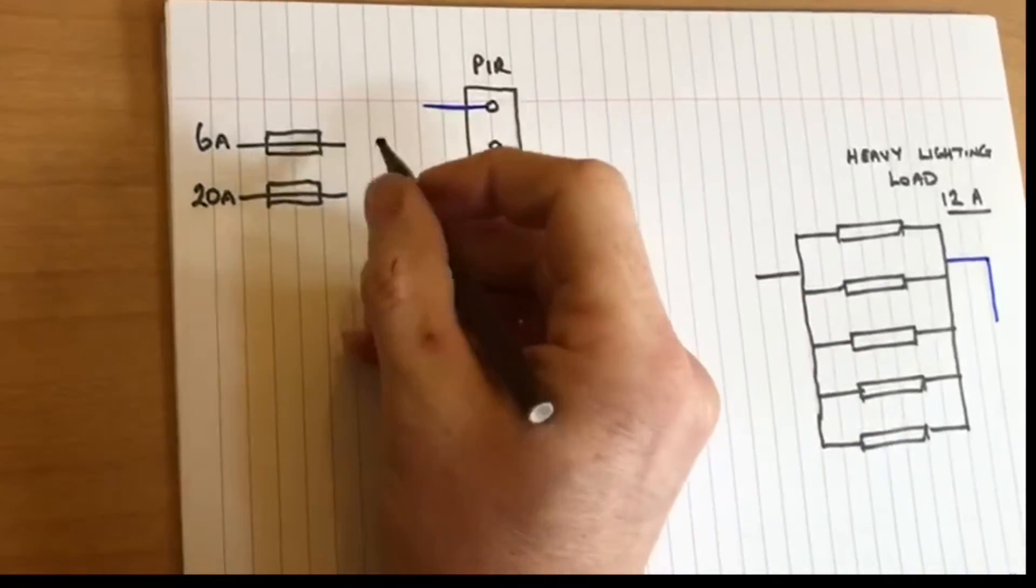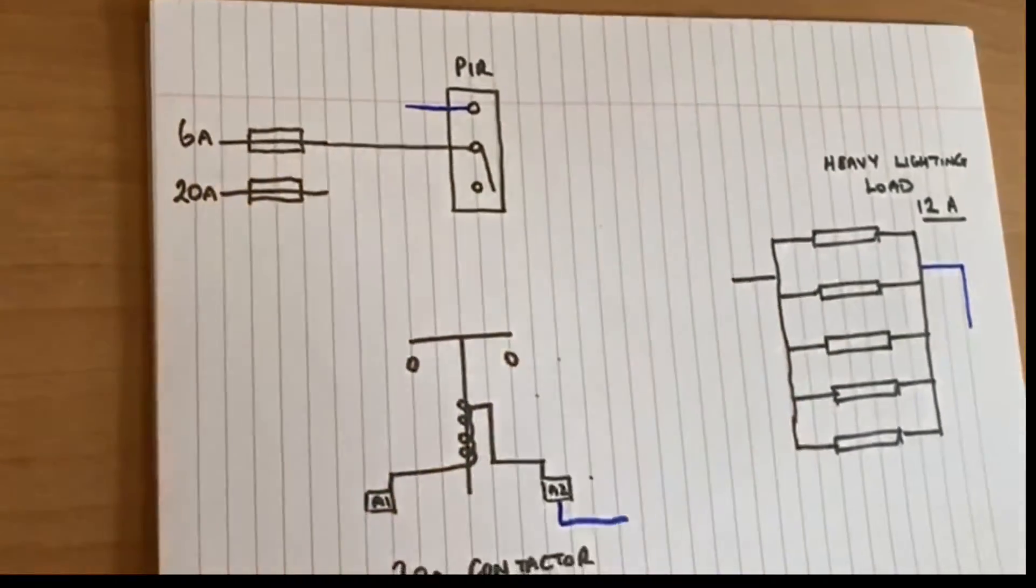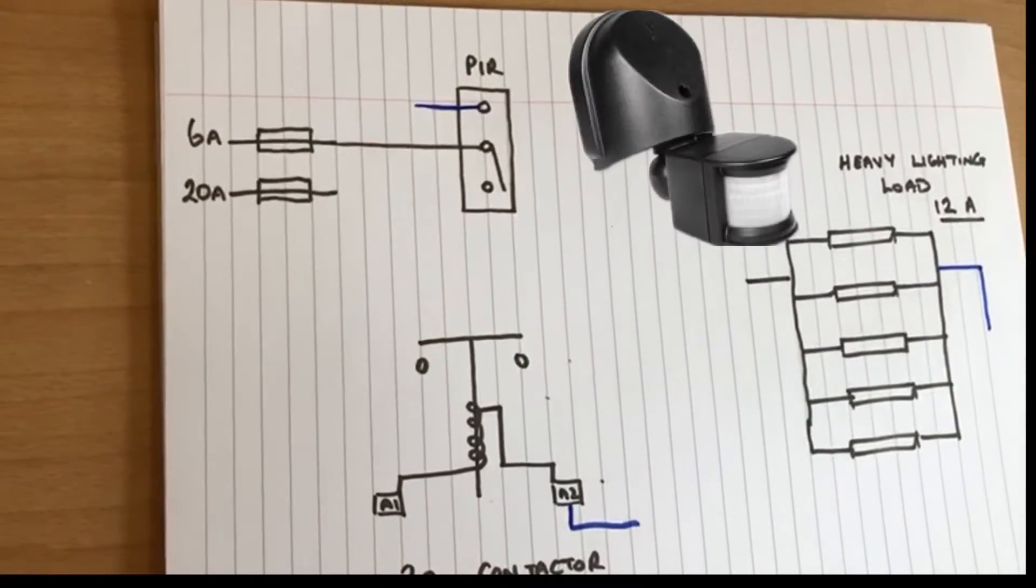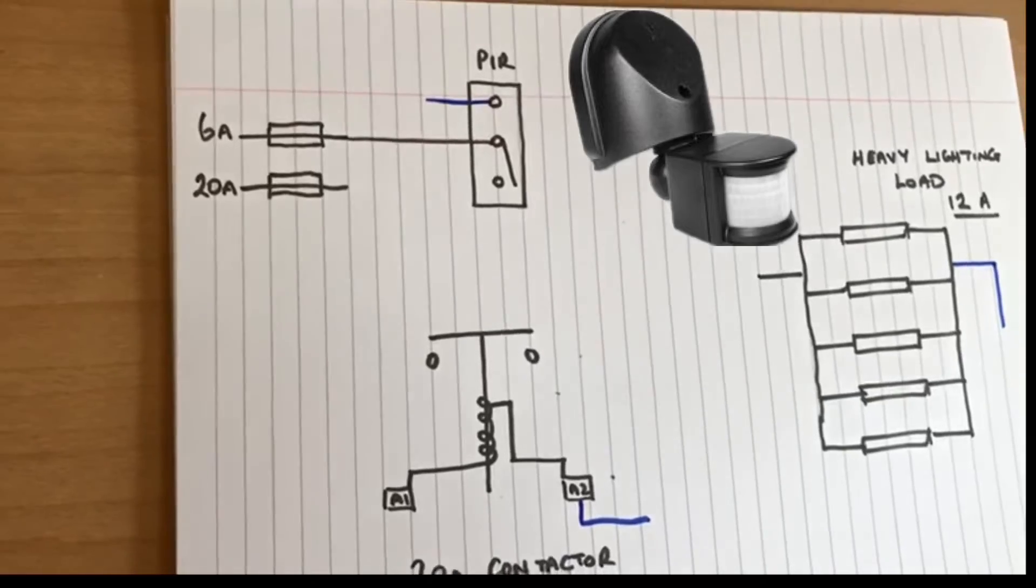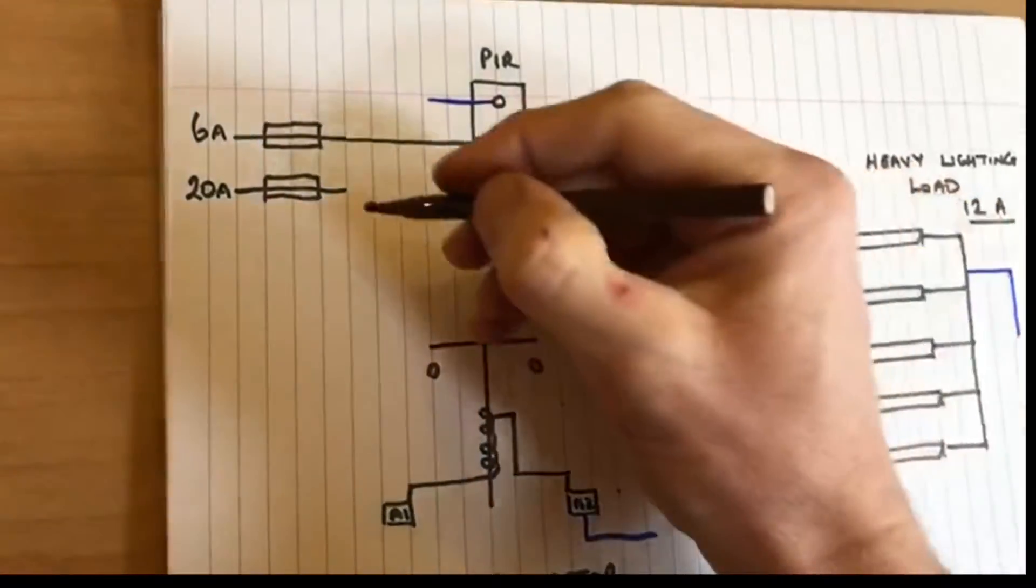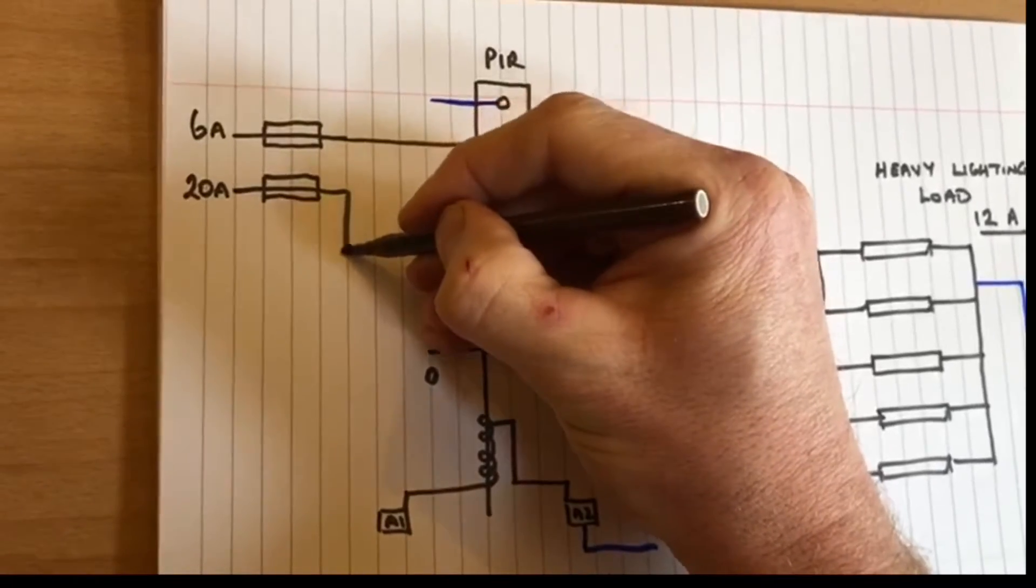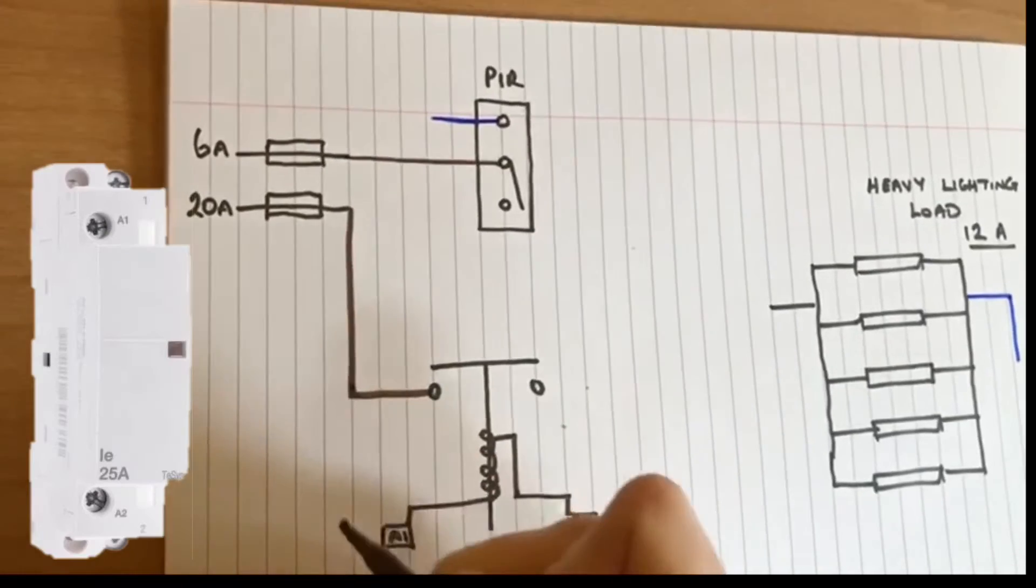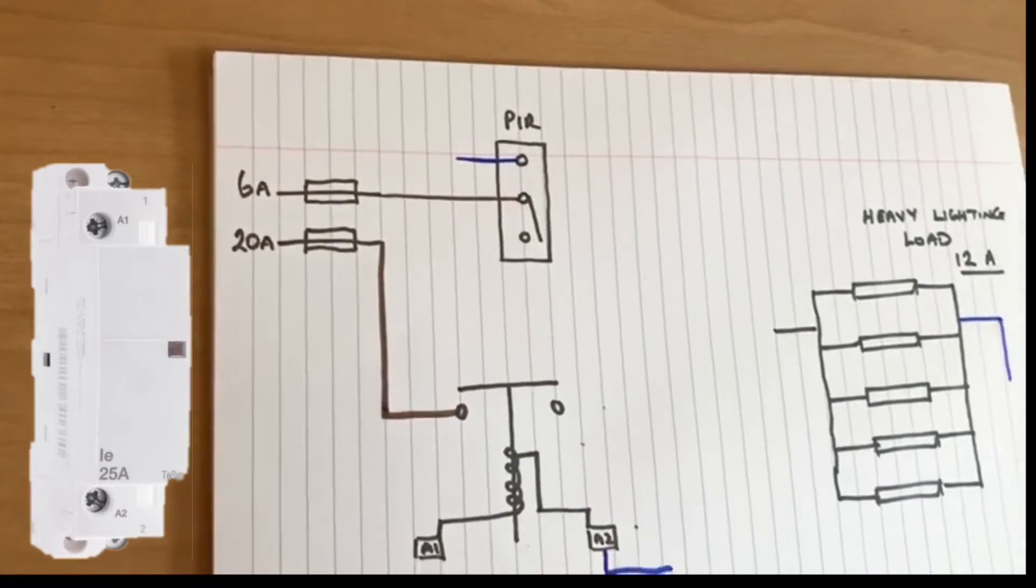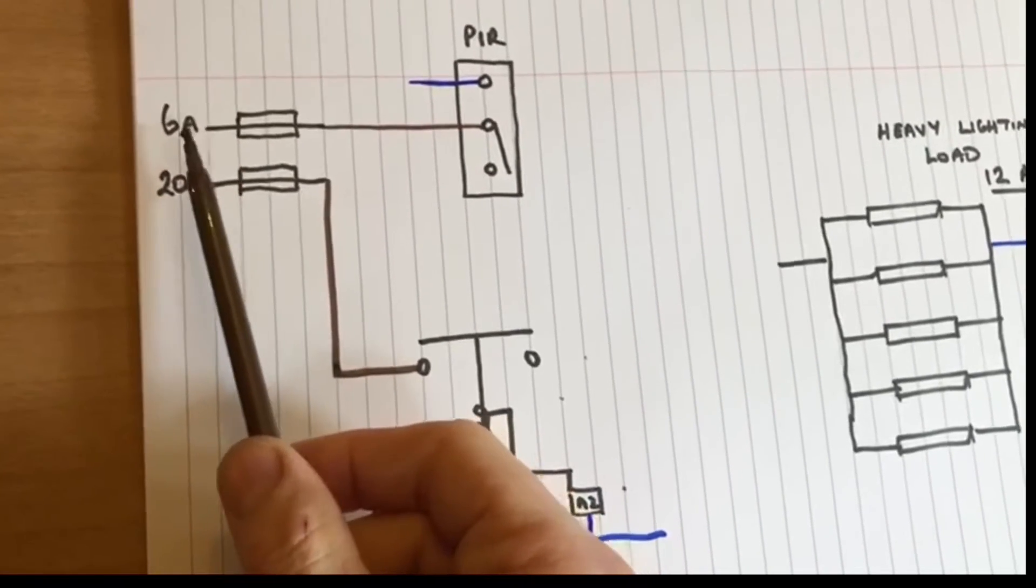So what we have is a live feed. It comes directly across to the PIR, and we have a live feed from the other circuit breaker. It goes to the contactor. Now remember, these are still single phase, but they are two circuits.